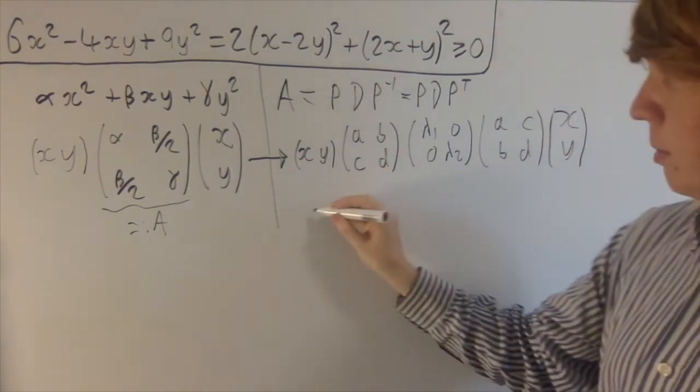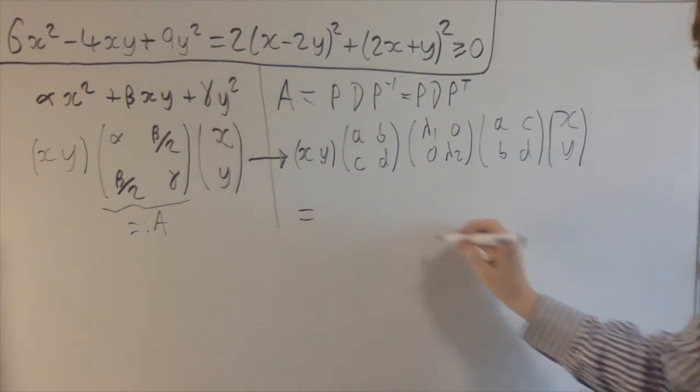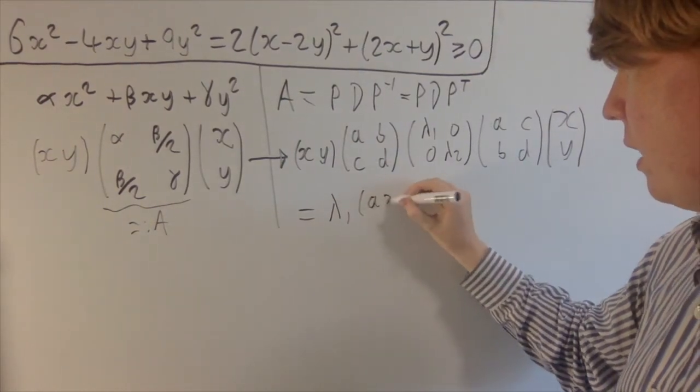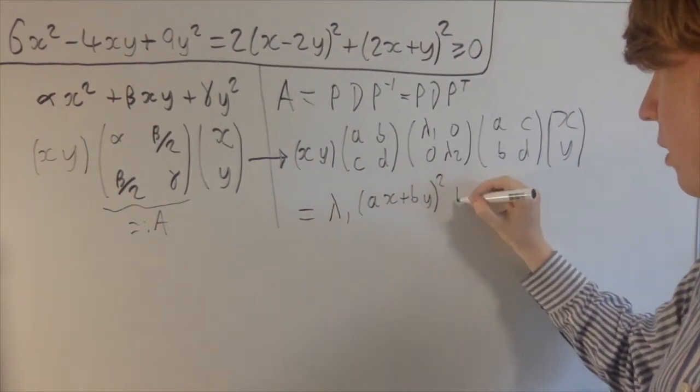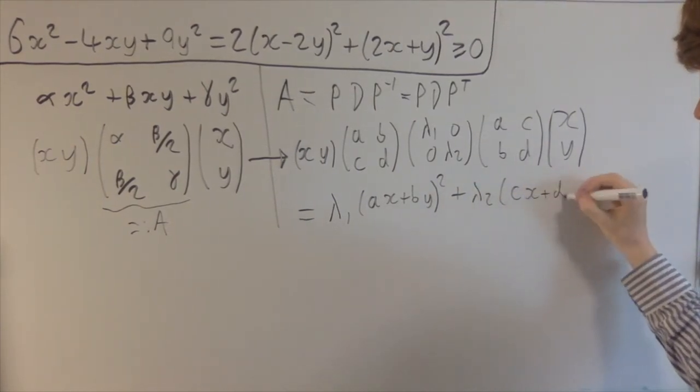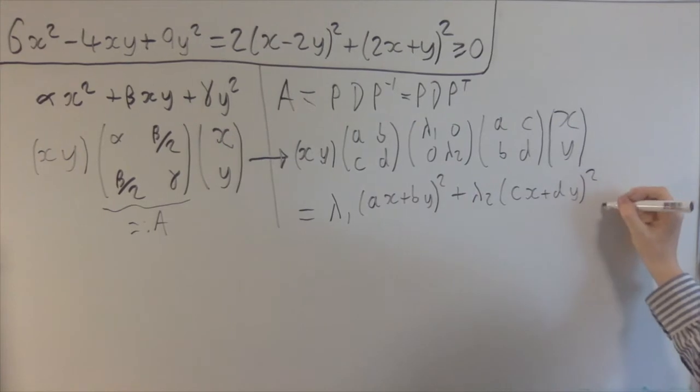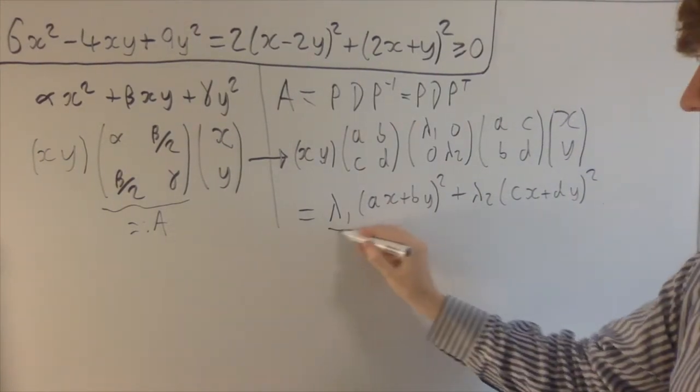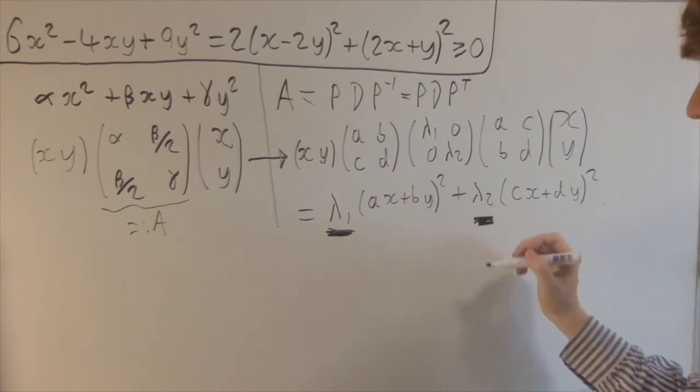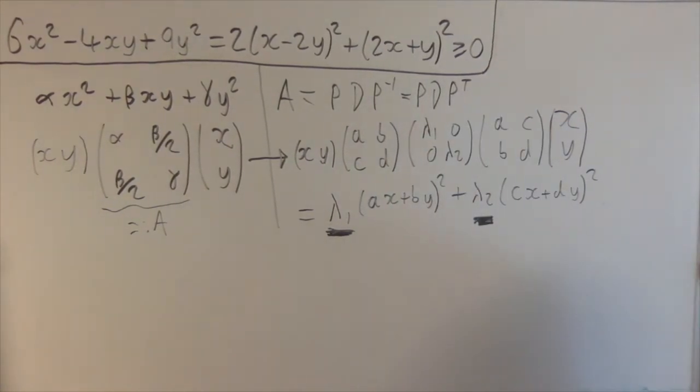And then when you multiply this out, basically what you get is lambda 1 times Ax plus By all squared, plus lambda 2 times Cx plus Dy all squared. And of course this depends on your eigenvalues have to both be positive in order for this to be greater than or equal to zero. If they're both negative, you can show that this is always less than or equal to zero.